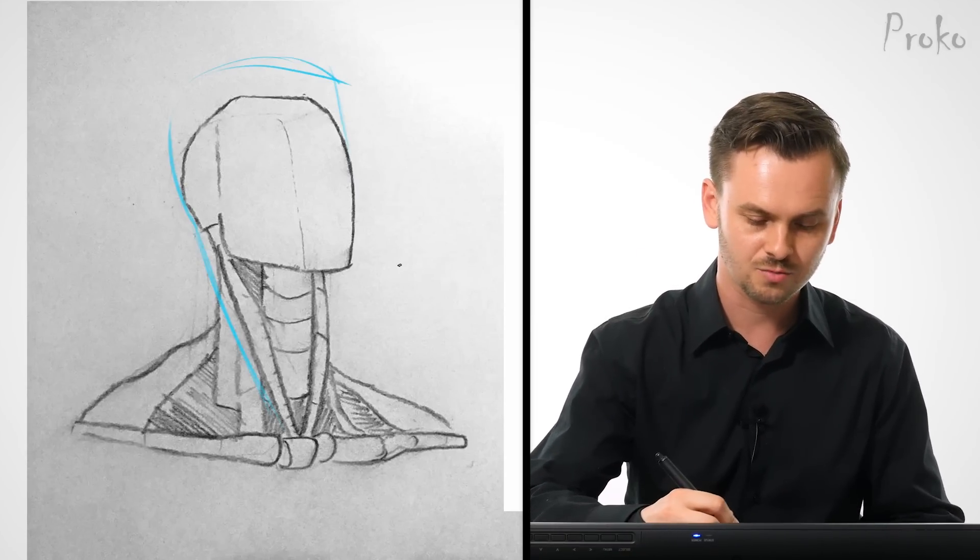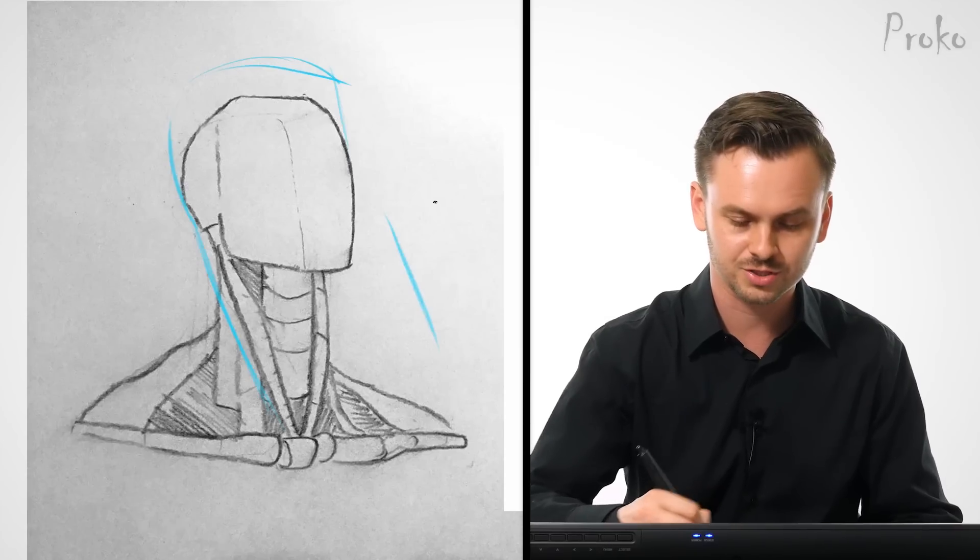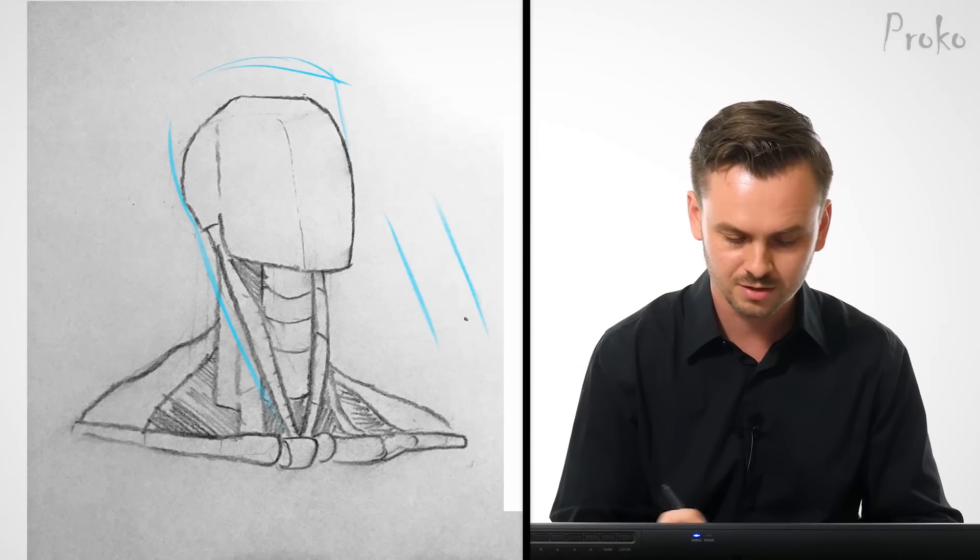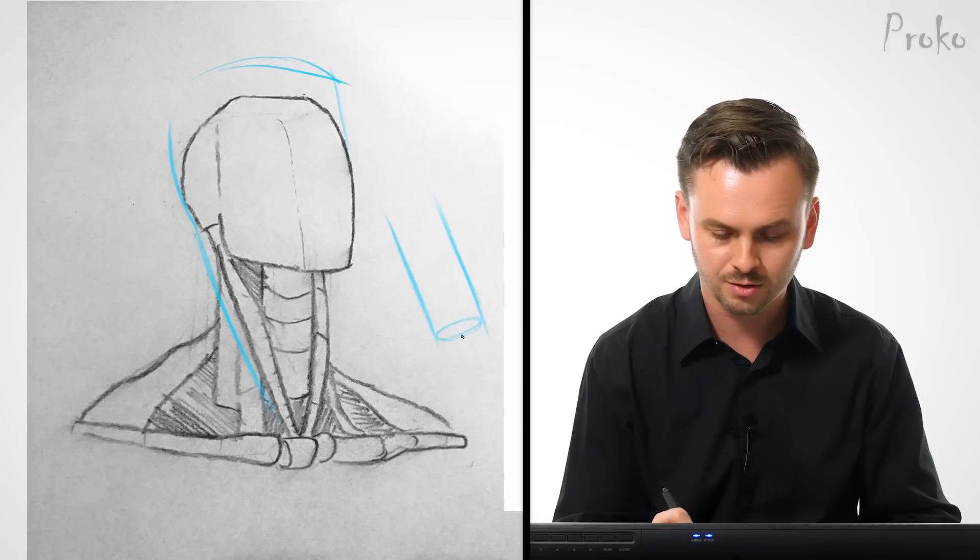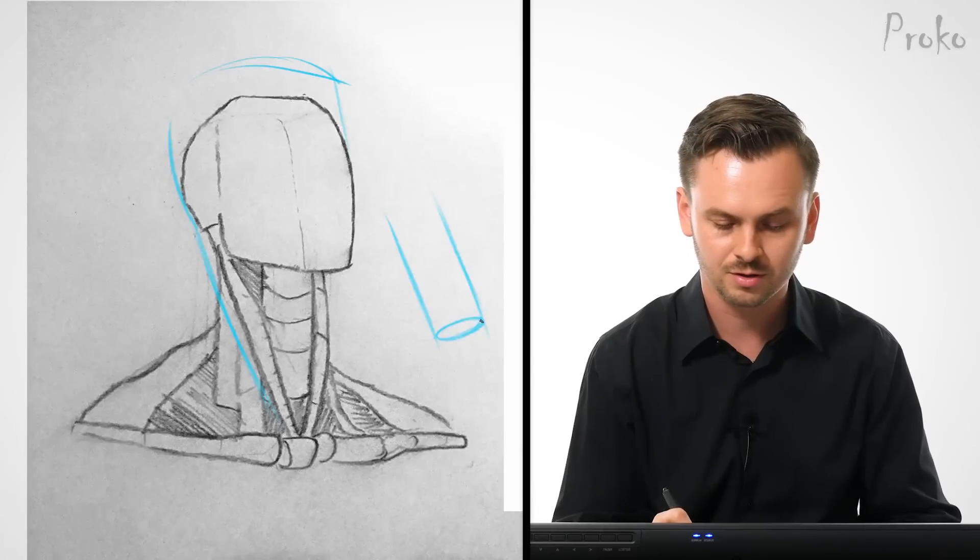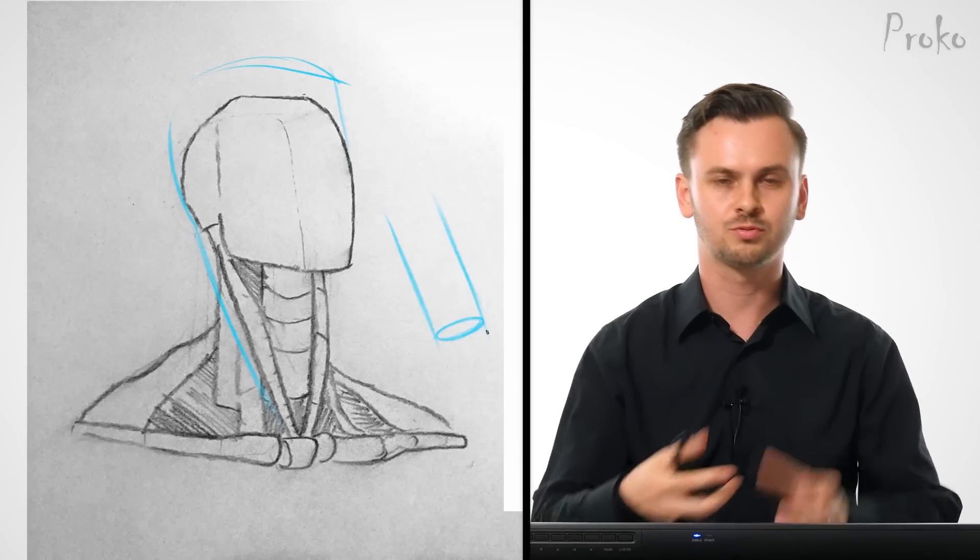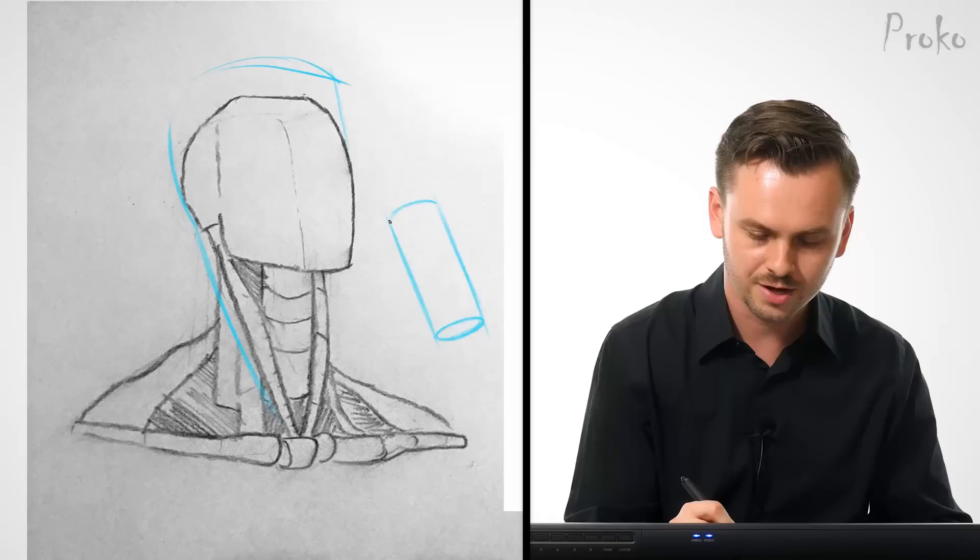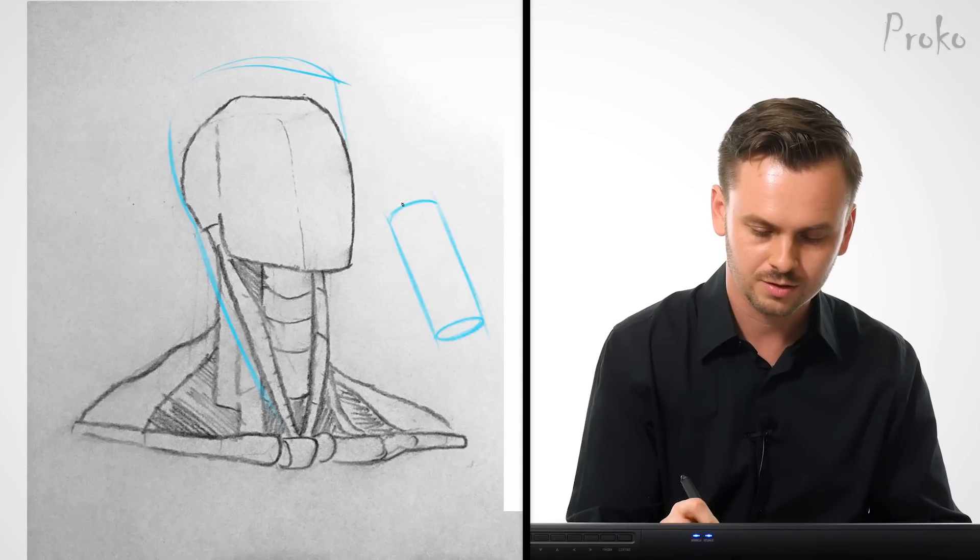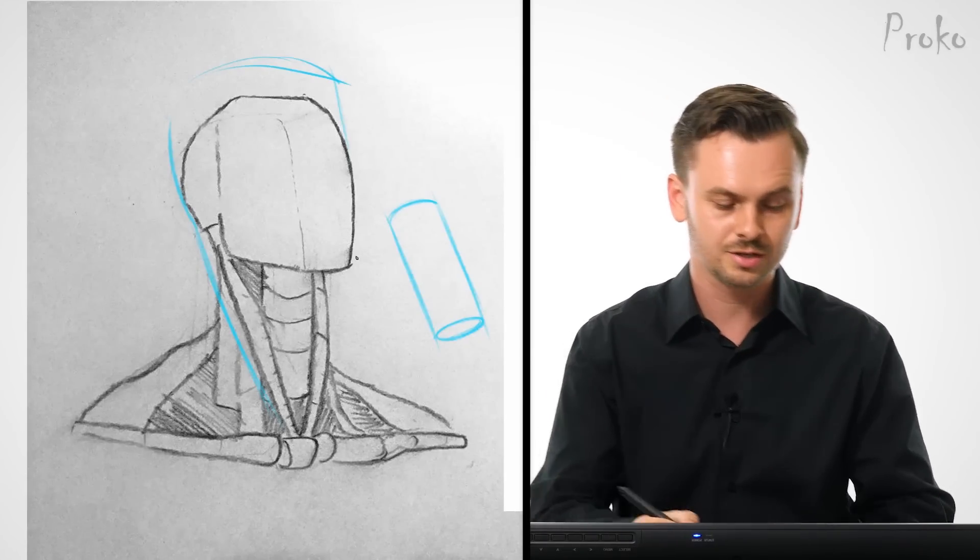The whole point of it is to show the roundness of the cylinder. So let's imagine that sternomastoid as an actual cylinder kind of coming down like this, and it's coming towards us a little bit. So we're going to see the bottom plane, that bottom cap. So imagine like a Pringles tube. And then at the top, you'll just see a curve like that. So see how that looks like it's coming towards us?